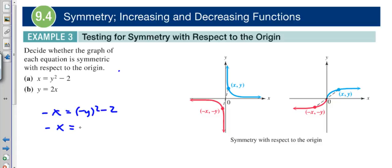Then that means I get -x = y² - 2. This isn't equivalent to the original. Even if you divide by -1 on both sides, you get x = 2 - y², which is still not equivalent to this. So that's how we know, even without looking at the graph, that this is not reflected across the origin.